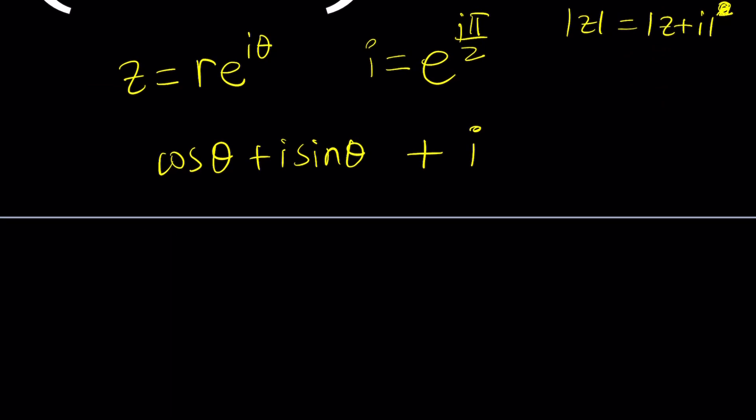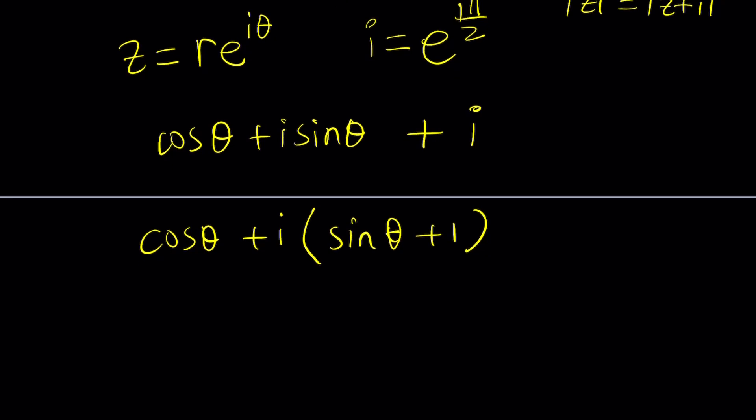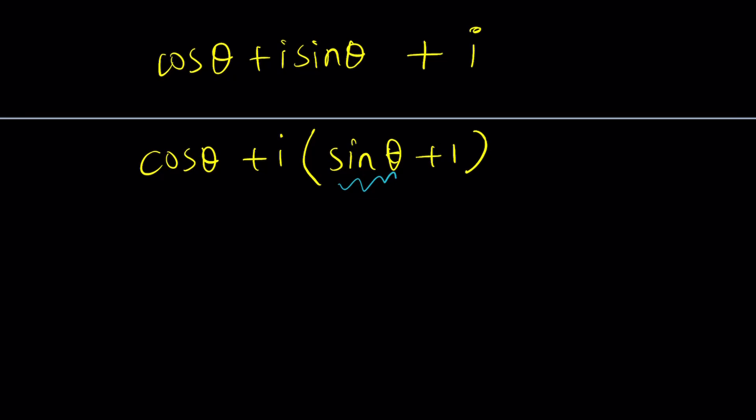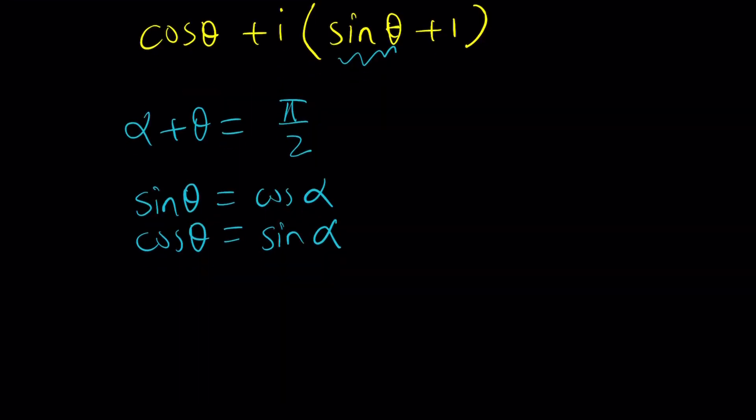And my approach is going to be to bake the i into this expression. And here's what I'm going to do. I'm going to go ahead and first factor out an i. So that's going to give me sine theta plus 1. Now, how do you bake that into this? So I want to get something like a cosine alpha plus i sine alpha. To be able to do that, I'm going to use the double angles or half angles. We can define another angle like alpha such that alpha plus theta is equal to pi over 2. So that sine theta is going to be cosine alpha and cosine theta is going to be sine alpha.